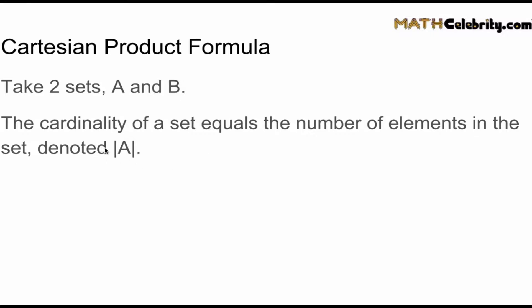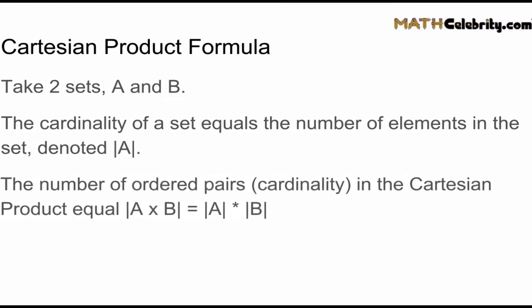So if we have a Cartesian product A × B, we expect the cardinality of the Cartesian product, otherwise known as the count, to equal the cardinality of A times the cardinality of B.